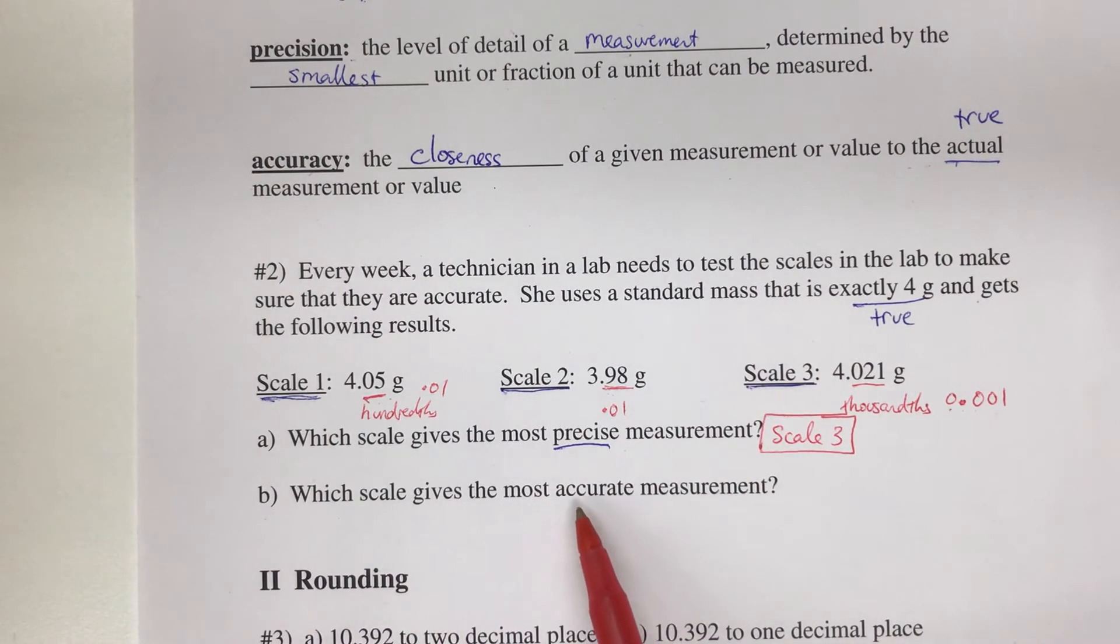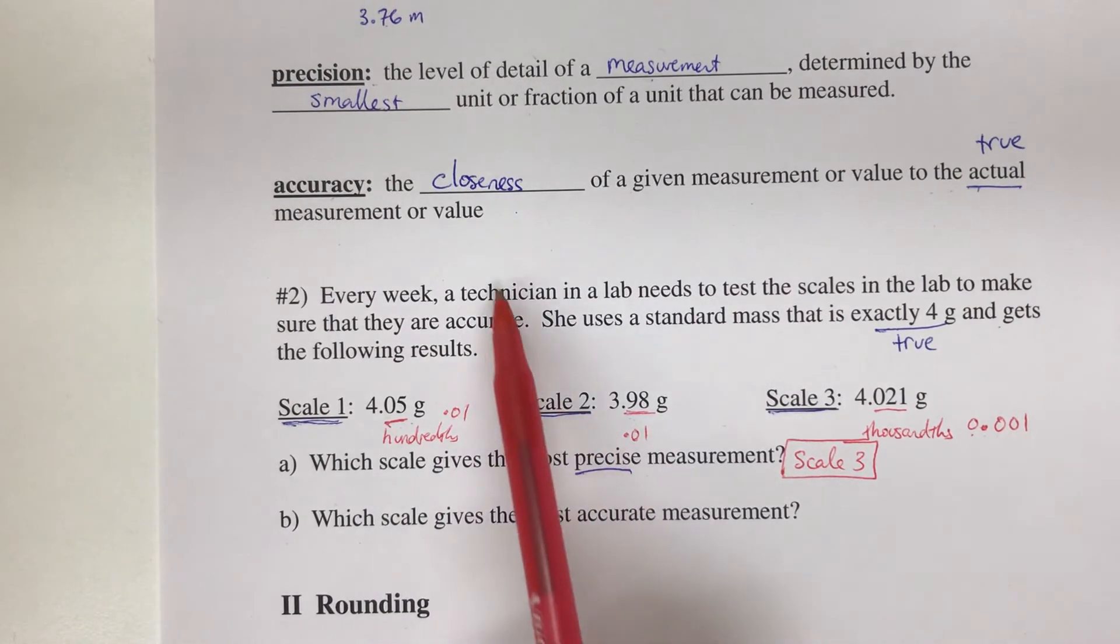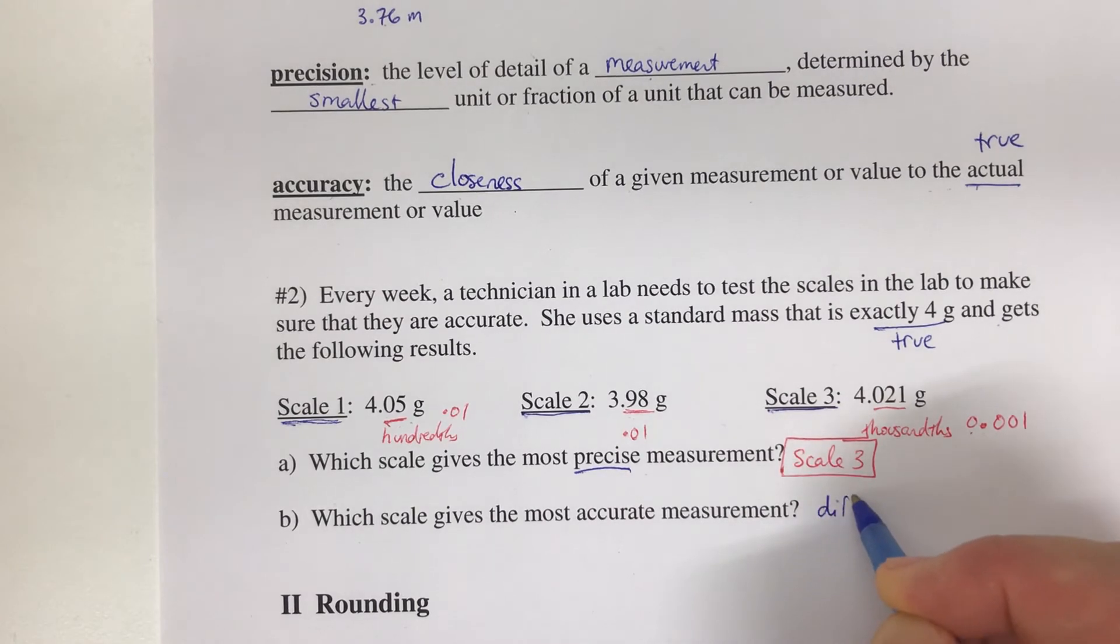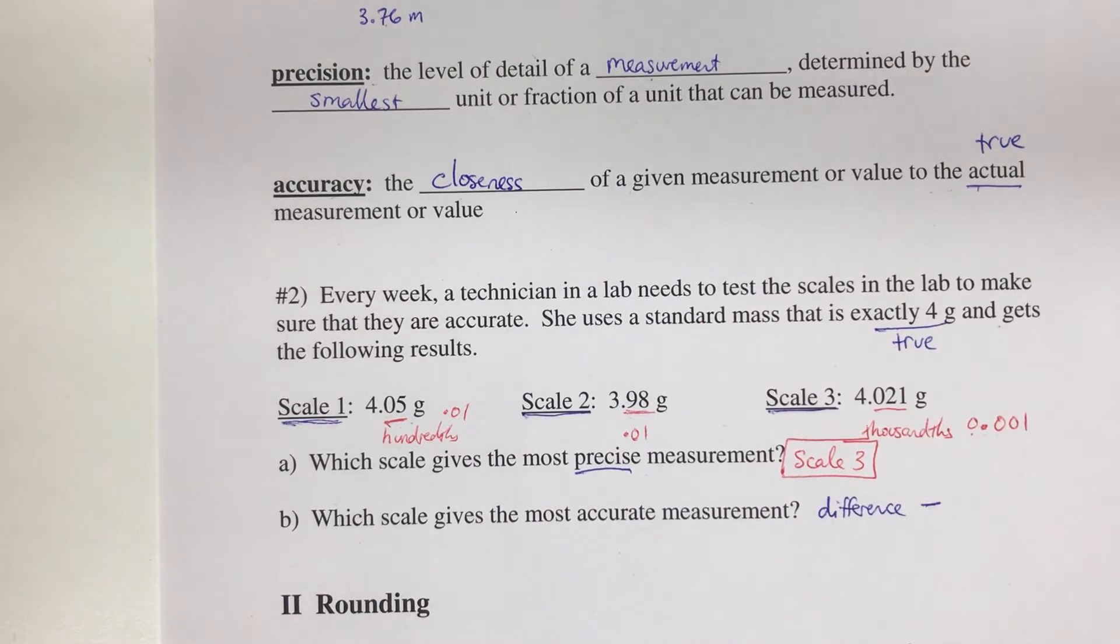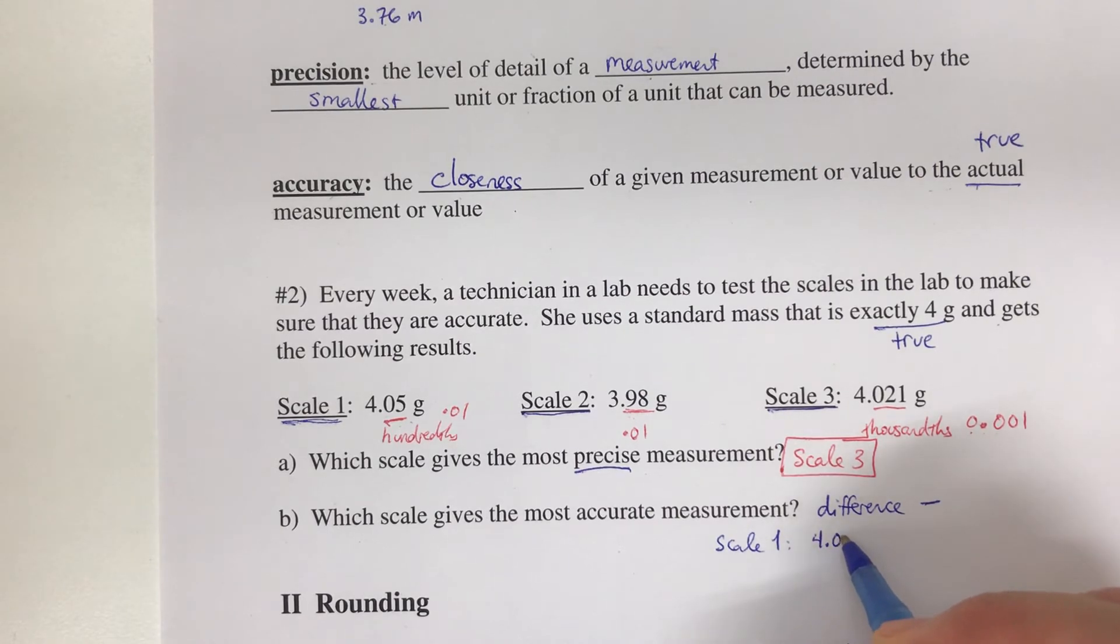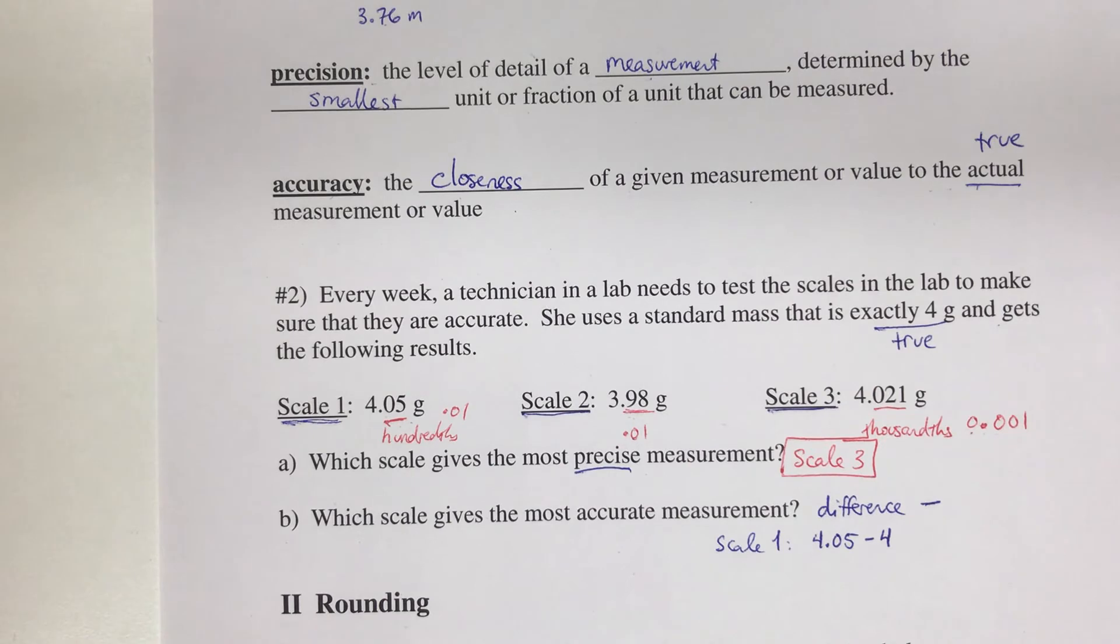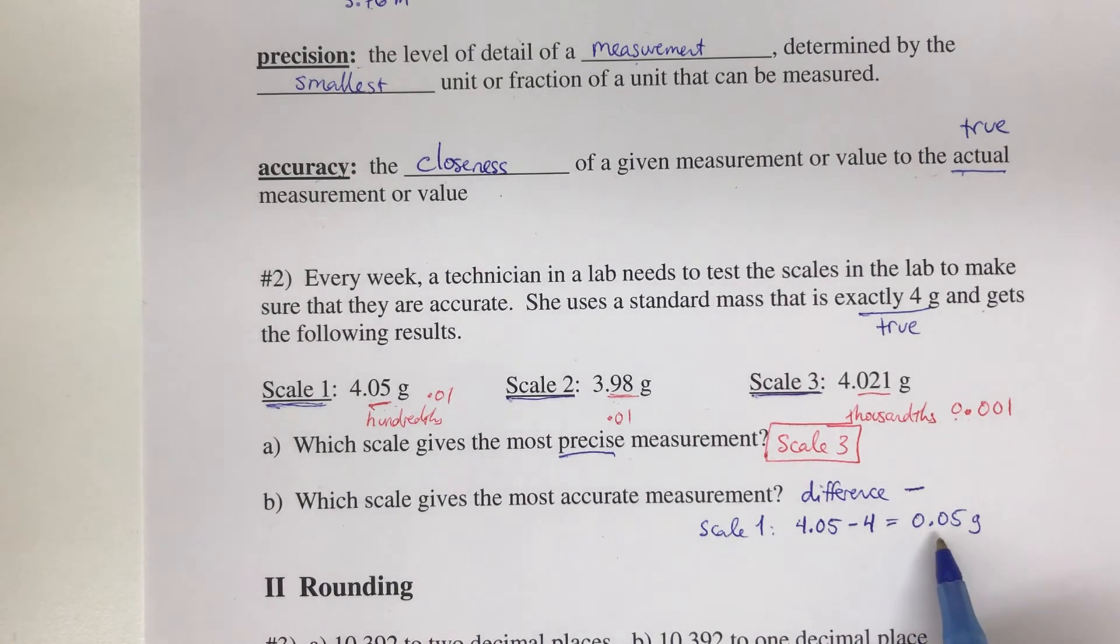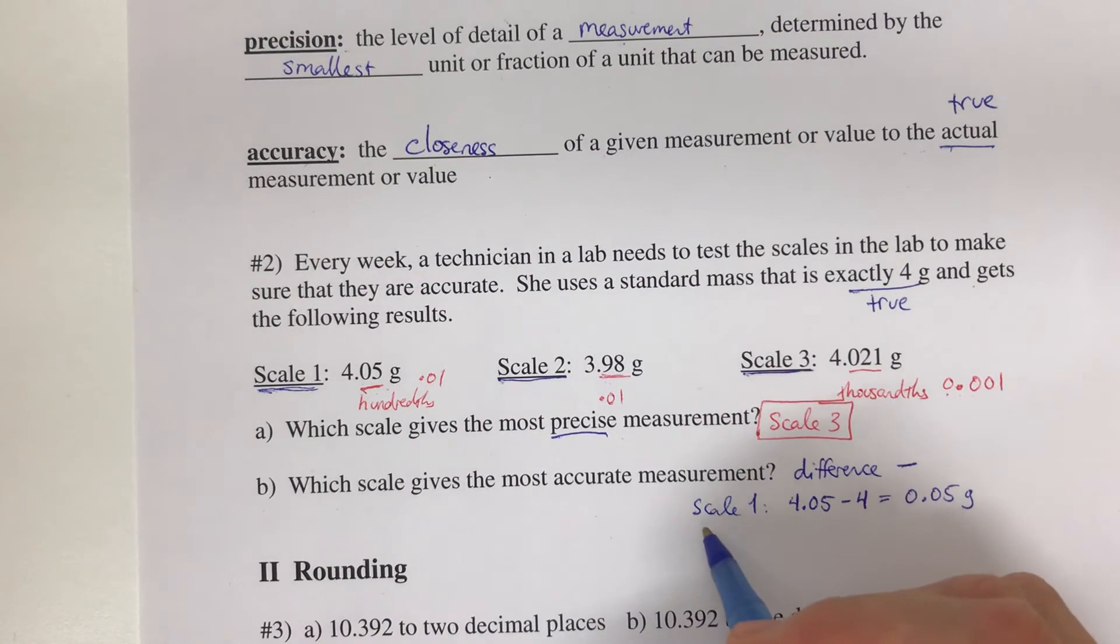Which scale gives the most accurate measurement? Accuracy is how close we are to the actual value, the true value. We want to take the measures we got and compare them to what the true measure was by taking a difference. Difference means to subtract. For Scale 1, we got 4.05, but what we wanted was 4. If we subtract, we get 0.05 grams.